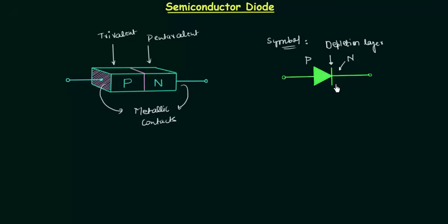So we have three things in the symbol of a semiconductor diode. The first thing is the P side — this triangle represents the P side. Then we have the depletion layer — this vertical line represents the depletion layer. And after the depletion layer we have the N side.